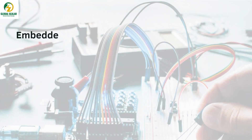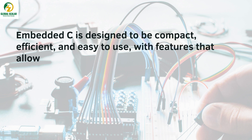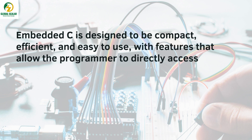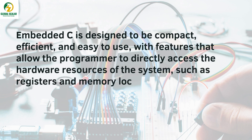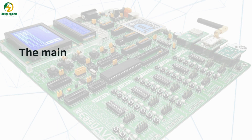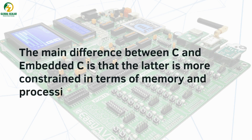Embedded-C is designed to be compact, efficient, and easy to use, with features that allow the programmer to directly access the hardware resources of the system, such as registers and memory locations. The main difference between C and Embedded-C is that the latter is more constrained in terms of memory and processing power.